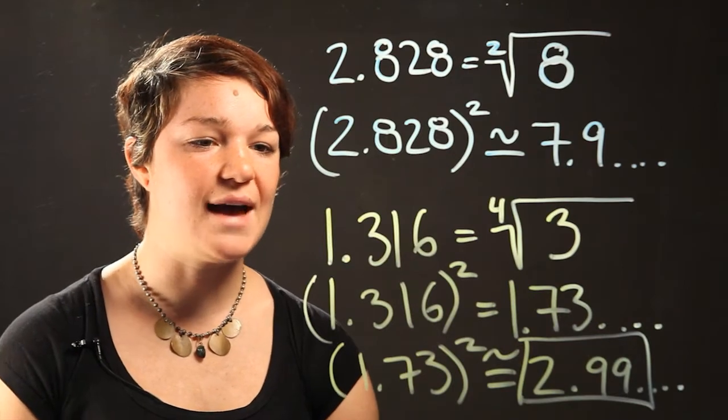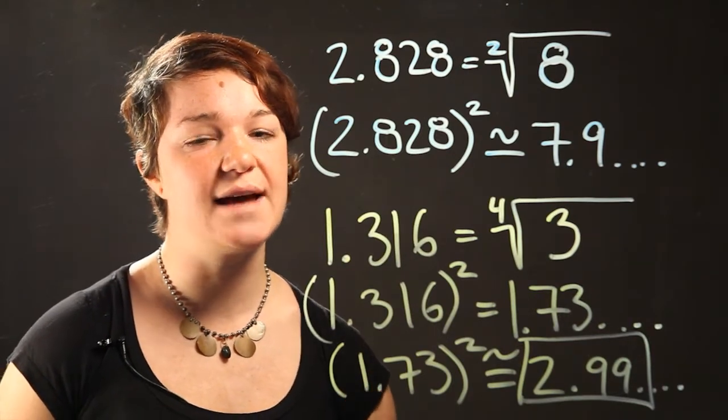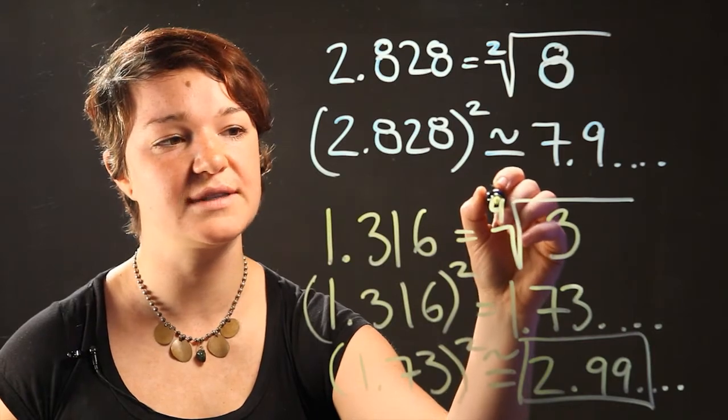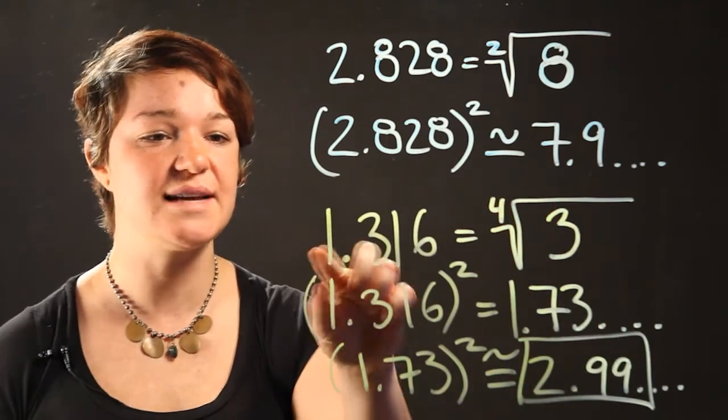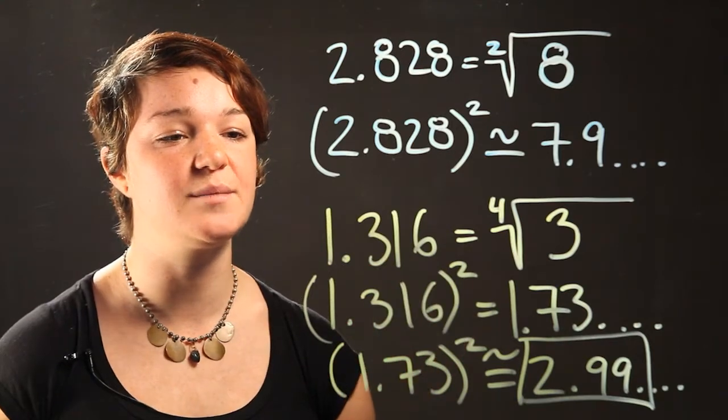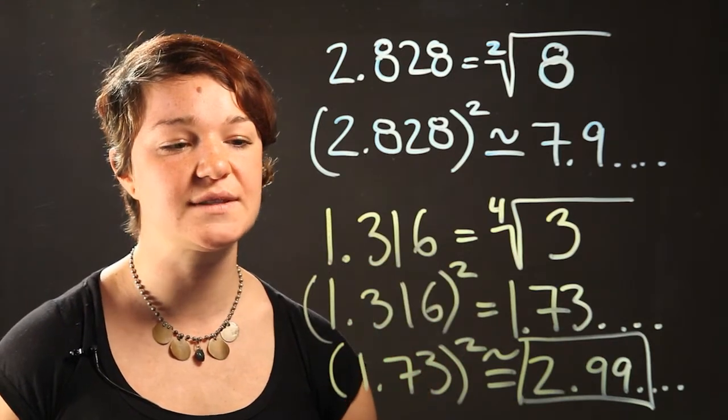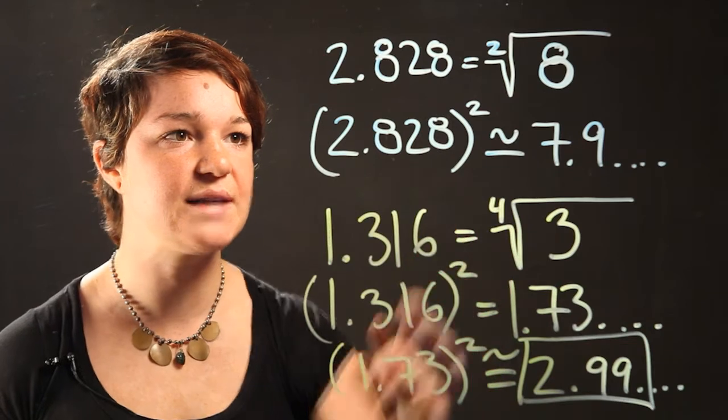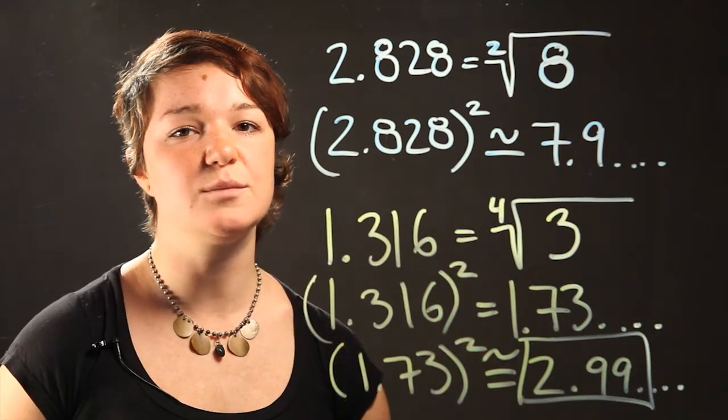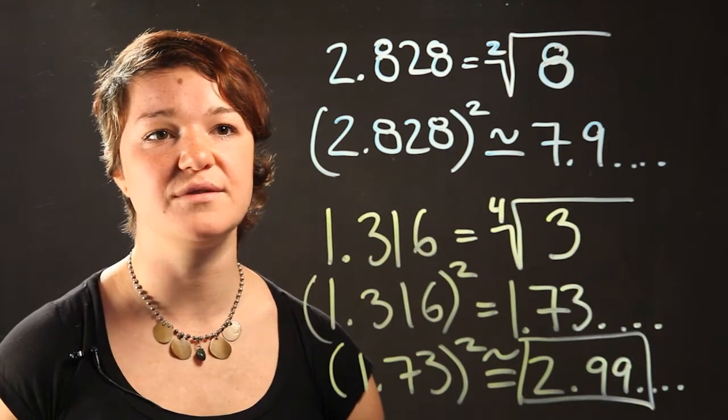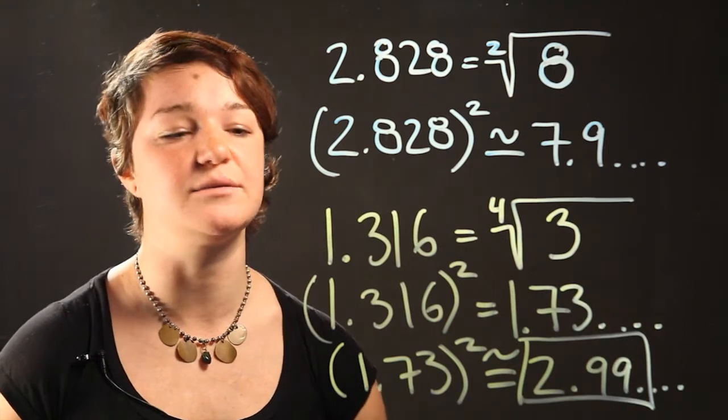Remember that in some cases you're going to get an index of 3. Here for example this is the index in which case you would have to take the decimal that you're given and multiply it by itself 3 times. And here in all these examples we used an even index so we had to multiply the number by itself several times or square it several times.